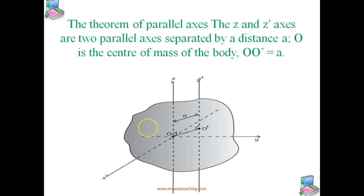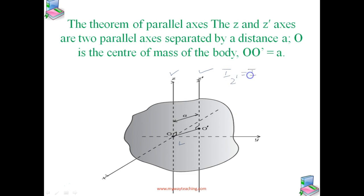The moment of inertia of a body about any axis is equal to the sum of the moment of inertia of the body about a parallel axis passing through its center of mass, and the product of its mass and the square of the distance between the two parallel axes. Looking at the figure, Z and Z' are the two parallel axes separated by distance A. The Z axis passes through the center of mass O of the rigid body. By the parallel axis theorem: Iz' = Iz + MA².